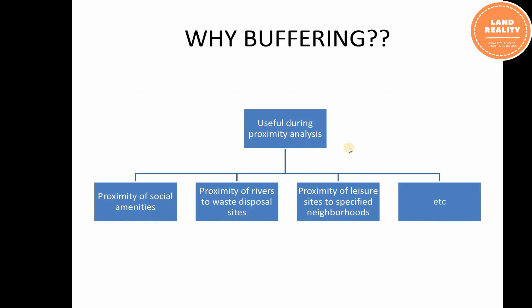Having understood what buffering means and the two main methods, it is important for us to know why we do buffering. Buffering is very useful for proximity analysis. For example, proximity of social amenities — if you want to find out social amenities like water or ATMs around a central business district within a particular radius, say 5 km, how many ATMs can be found within those areas? Buffer can help us achieve that.